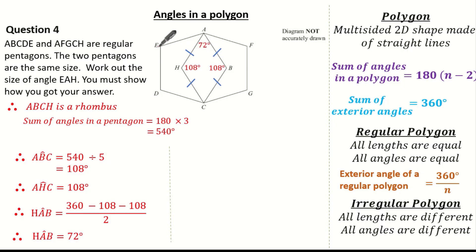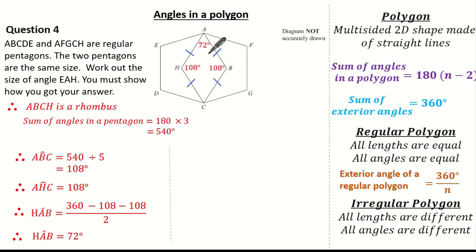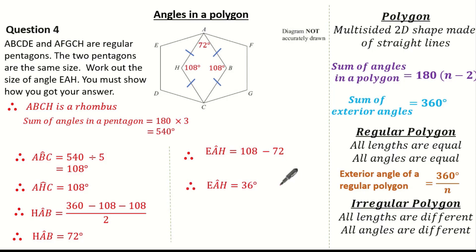Now I can work out angle E to A to H. The full interior angle of the regular pentagon at A is 108 degrees. So angle EAH is simply 108 take away 72, which means angle E to A to H is 36 degrees.